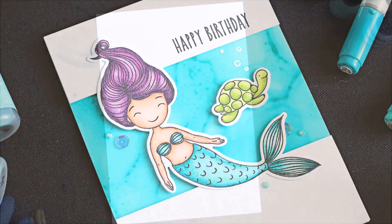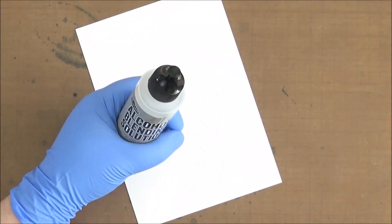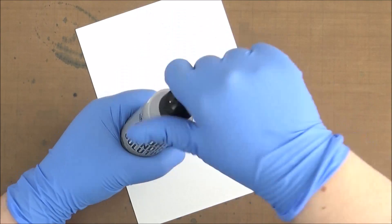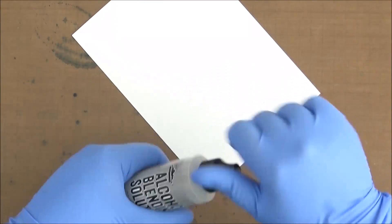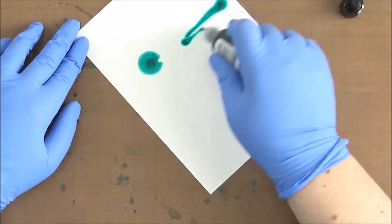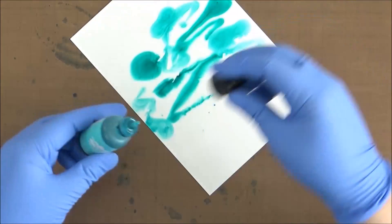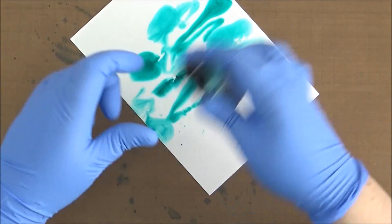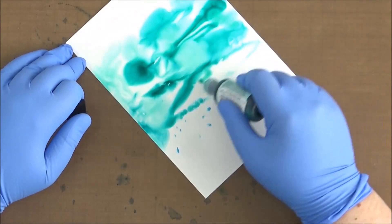I'm starting with a piece of Yupo paper, a synthetic paper made from polypropylene that works really well with alcohol inks. I'm adding some blending solution and then using Tim Holtz alcohol inks in three shades of turquoise: mermaid, pool, and aqua. I'm not being too precise about where I place them because they're all going to meld together, but I want three different shades.